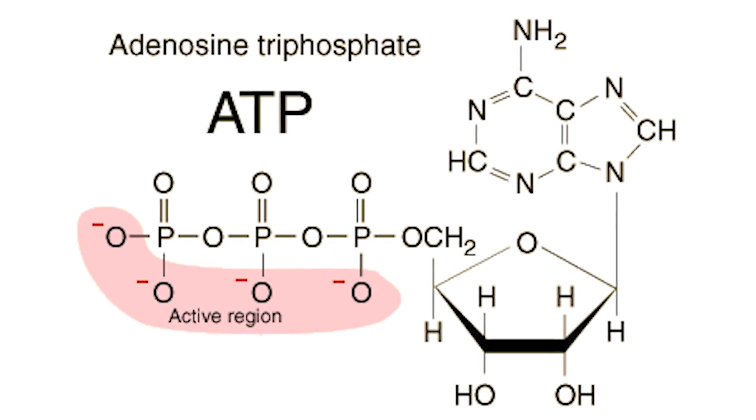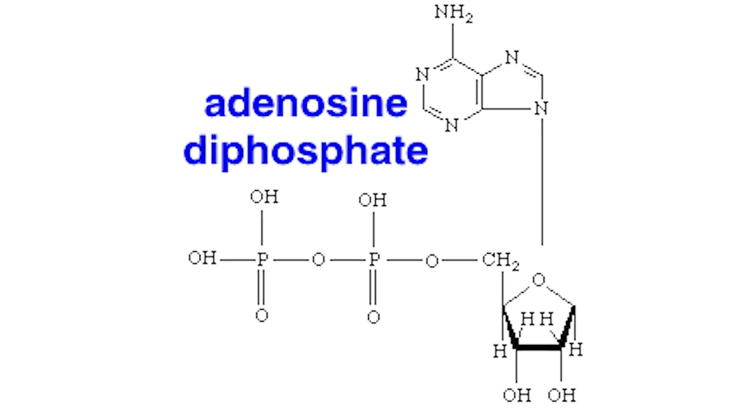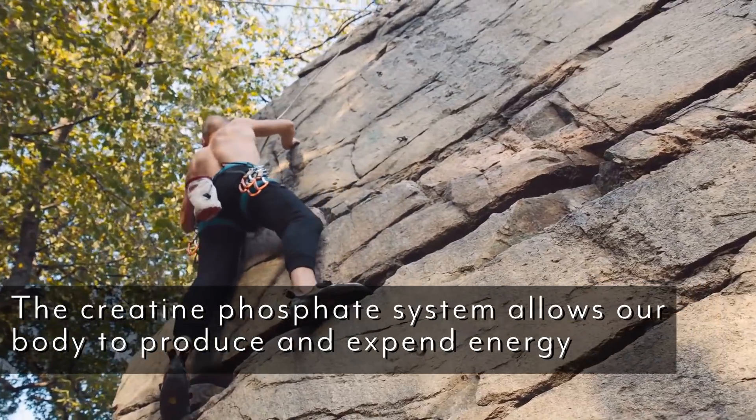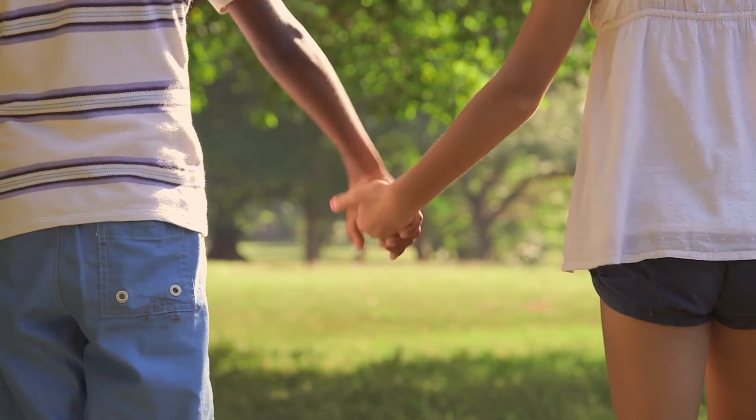Creatine goes to the adenosine triphosphate and steals a phosphate molecule from it. Adenosine triphosphate means adenosine with three phosphate molecules. Creatine comes in and rips one of those phosphate molecules away, so now you're left with adenosine diphosphate — adenosine and two phosphate molecules — while the creatine, now becoming creatine phosphate, travels to another area of the cell where actual work and output occurs, drops off that phosphate molecule, and combines with ADP again to make ATP again.